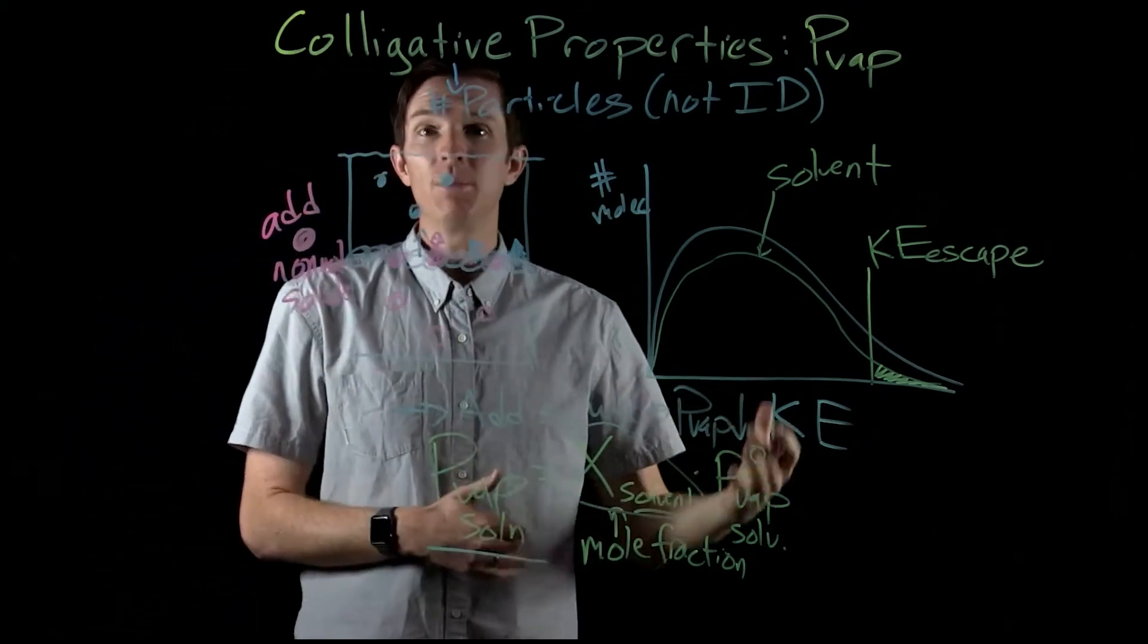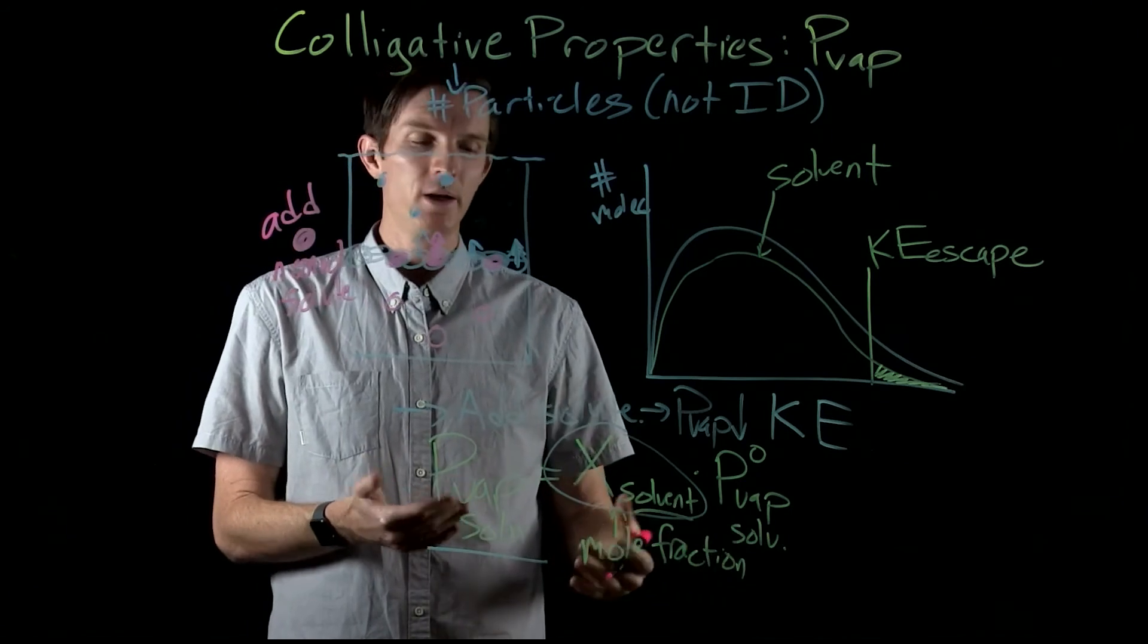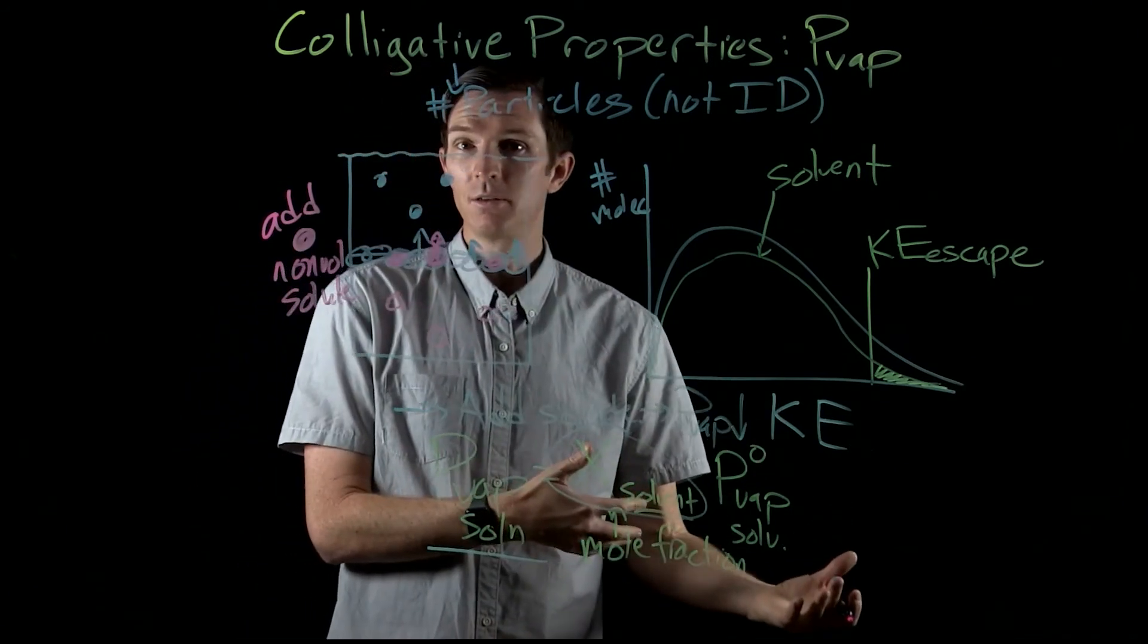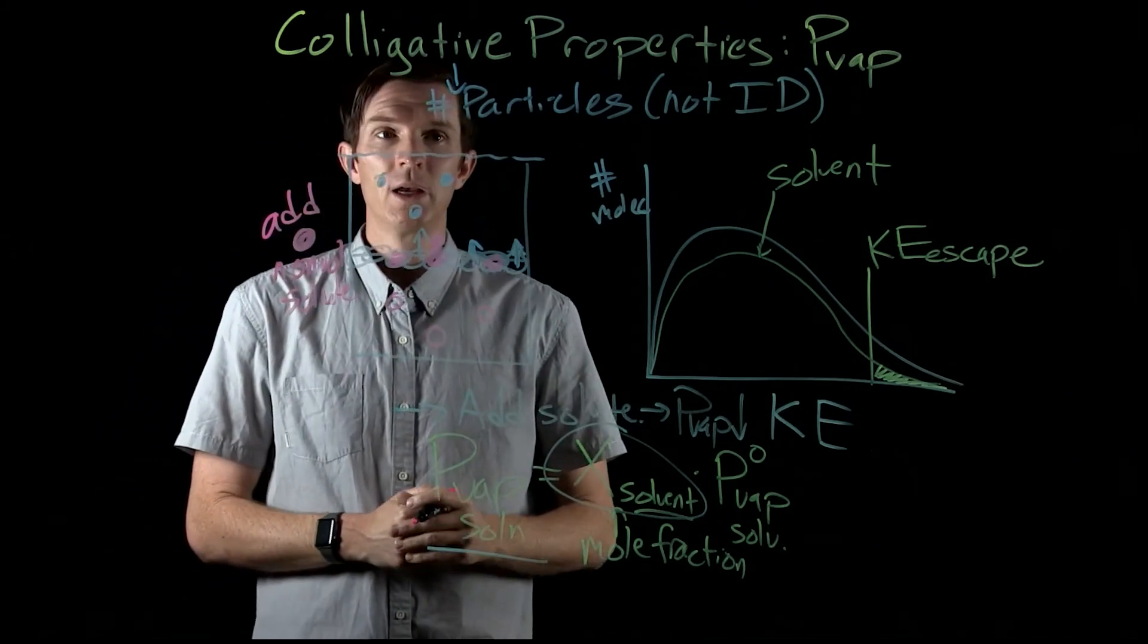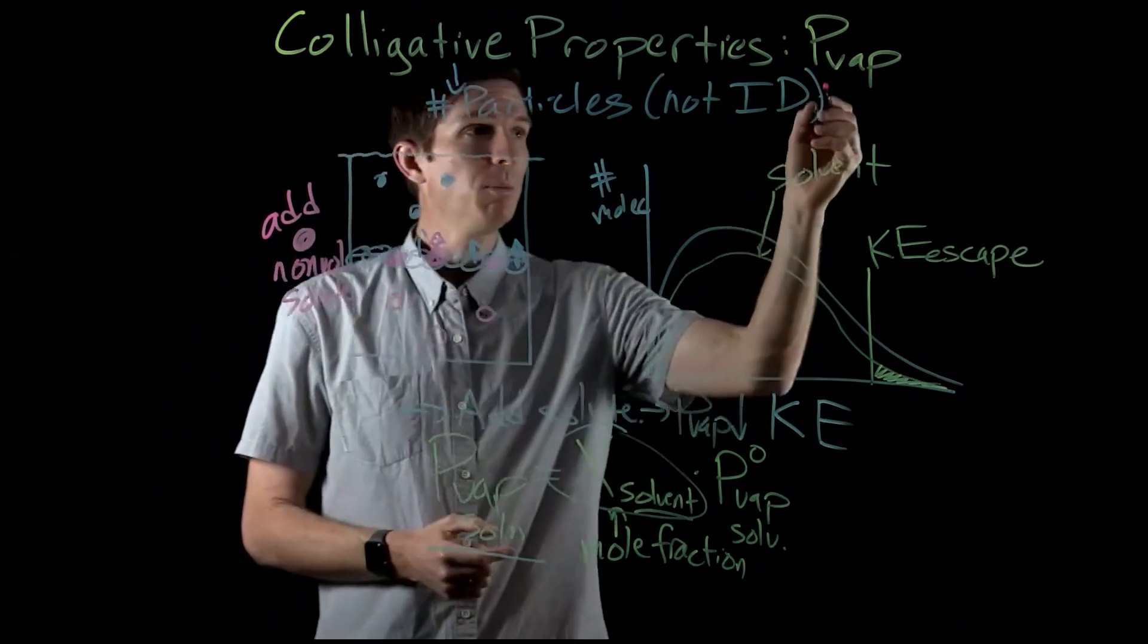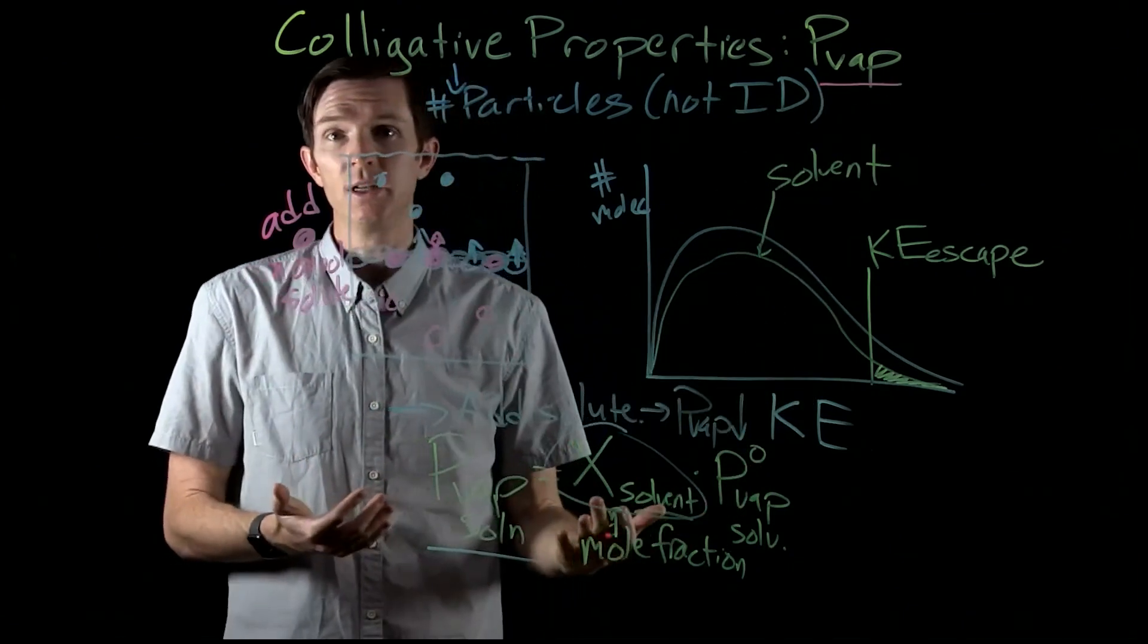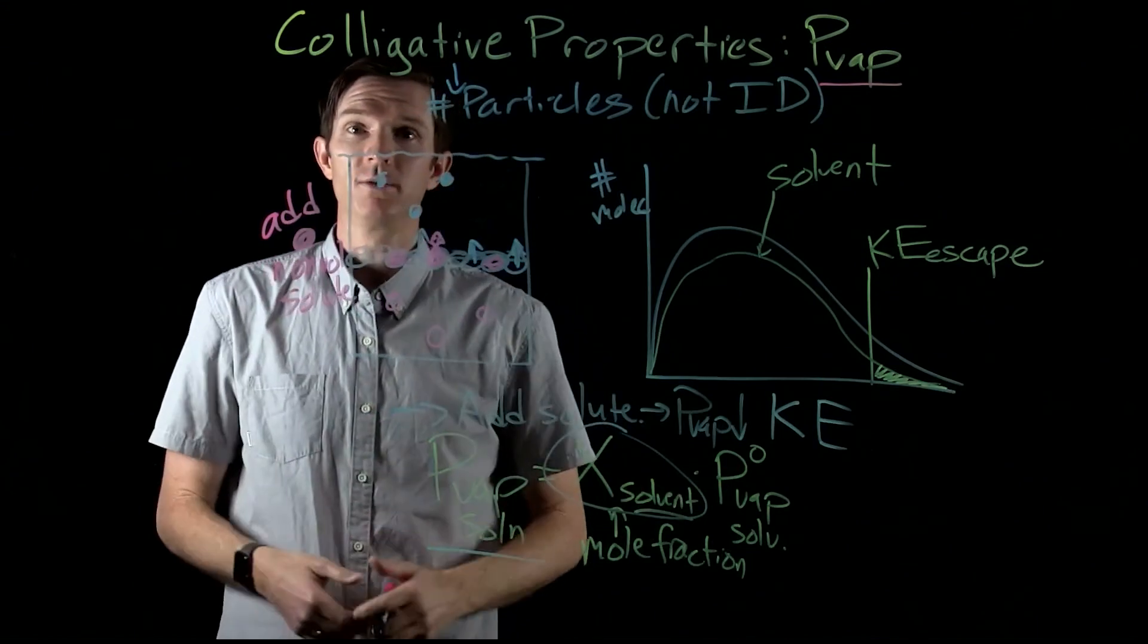And so we're going to follow this up by looking at some calculations, an example of a solution where we're going to compare it from a pure solvent to a solution and how we relate those two together. Our next one that we're going to look at is going to be boiling point. And we're going to see how vapor pressure is very much related to how the boiling point is affected for a solution versus a solvent.